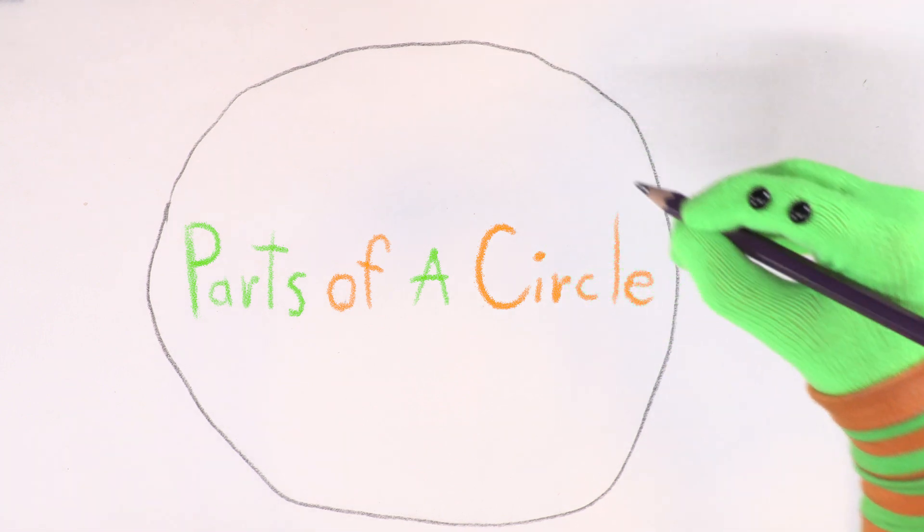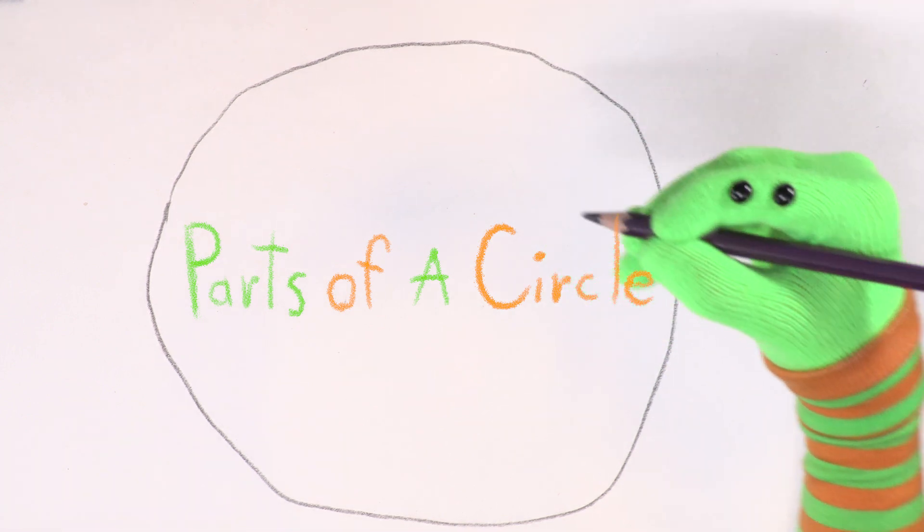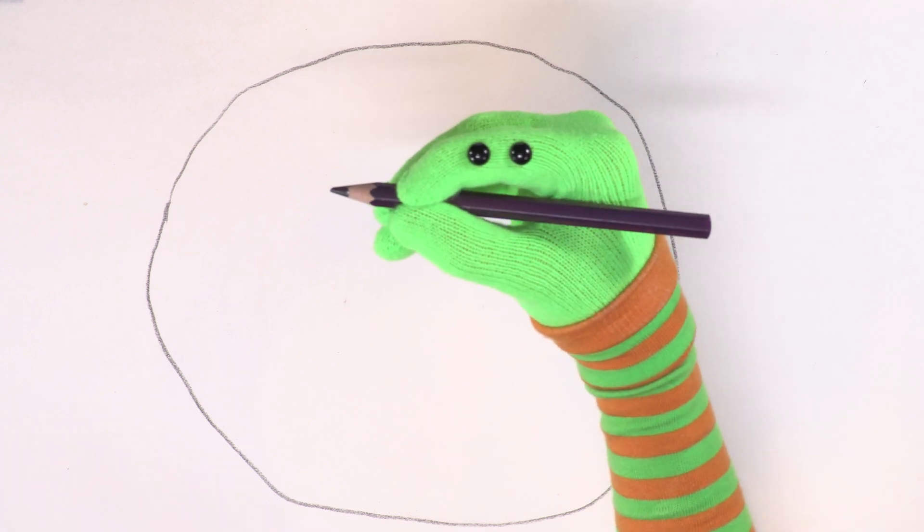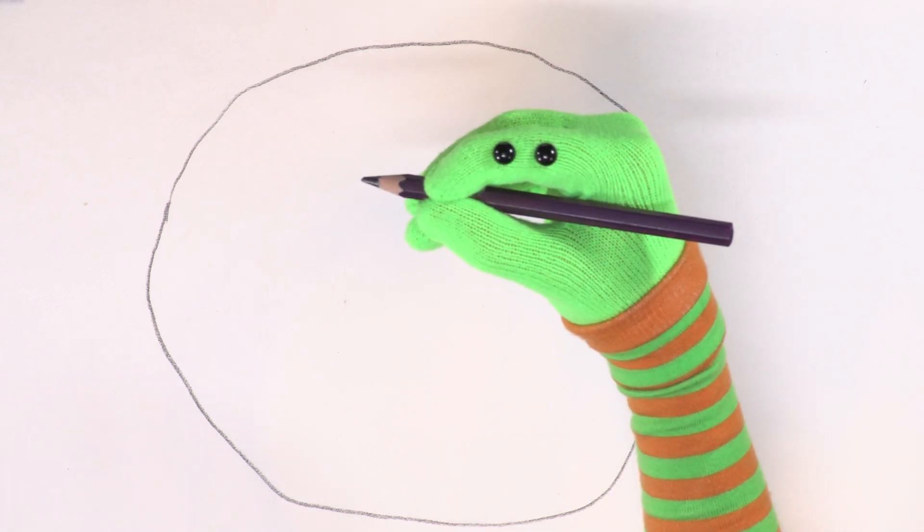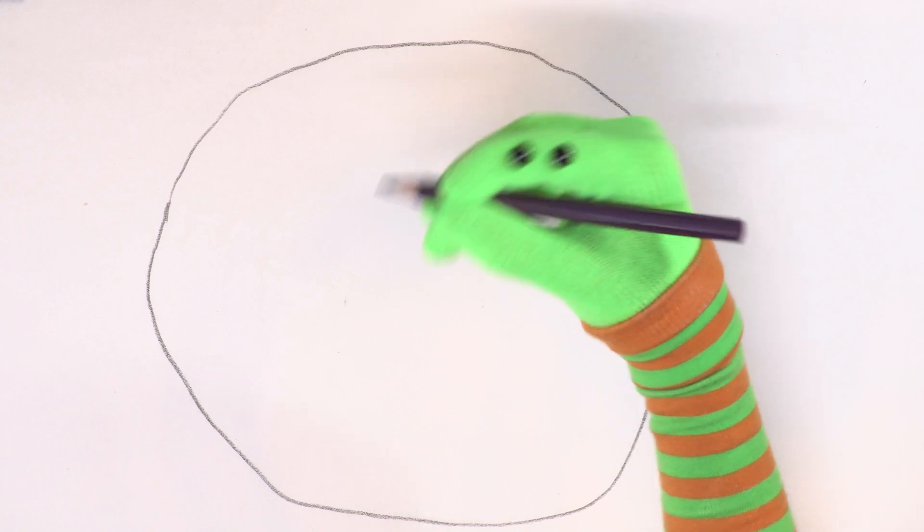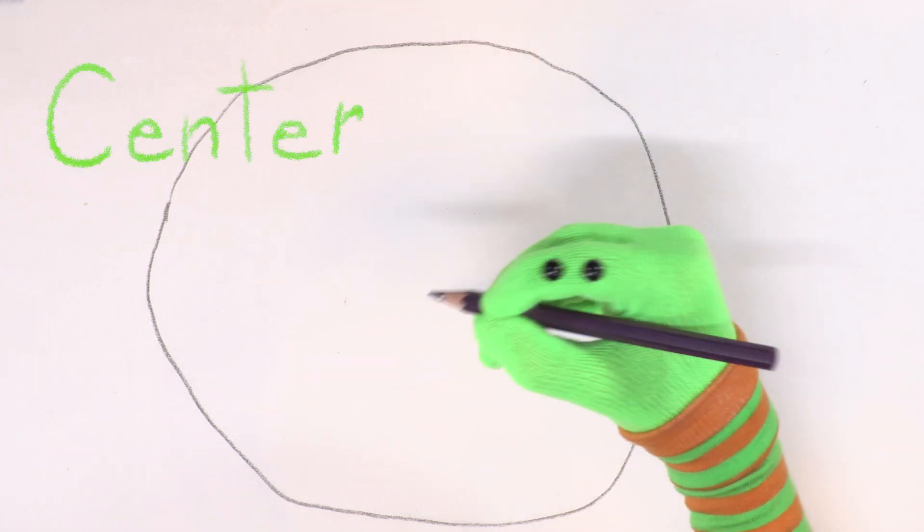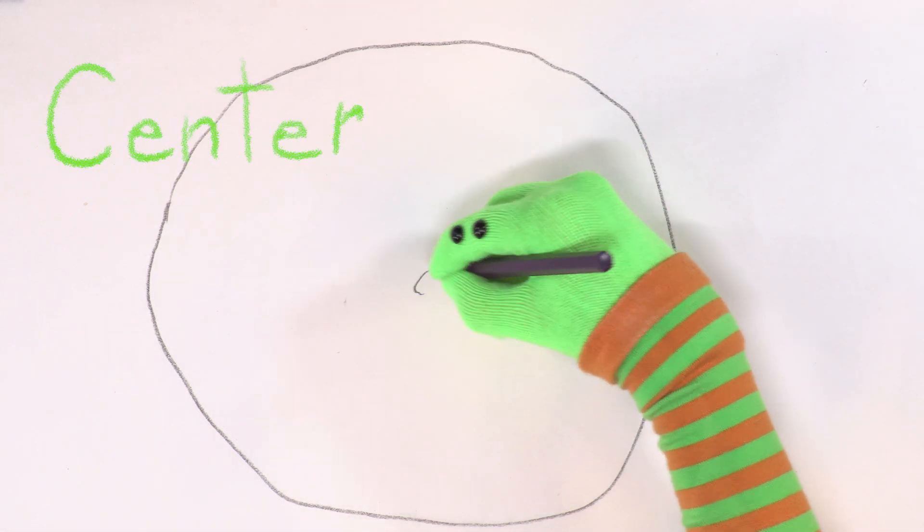Kids, I'm going to name the parts of the circle. Ziggy, you can doodle on your circle where the parts are. Kids, you can doodle along with Ziggy at home. Ready? Doodlebug! The center, the middle of the circle.